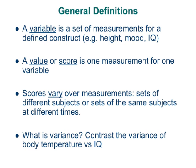Let's think about what variance means by contrasting the variability in body temperature versus variability in an IQ score. Body temperatures don't vary much. Everyone's body temperature is approximately 98.6. The reason it's 98.6 is because warm-blooded animals have a different metabolism, and the enzymes in your body that metabolize carbohydrates work best at 98.6.